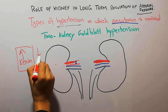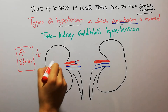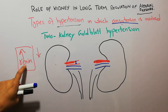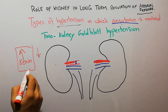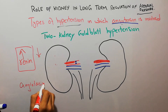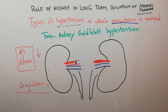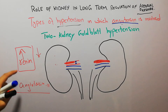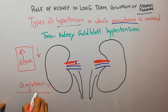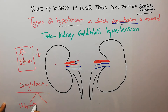Because blood flow to the clamped kidney has dropped, renin secretion from that kidney has increased. The renin will lead to the formation of angiotensin. Renin acts on angiotensinogen and converts it finally into angiotensin 2, and angiotensin 2 causes vasoconstriction and retention of salt and water.